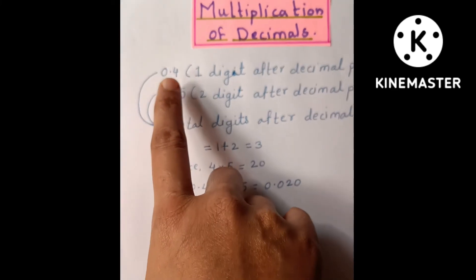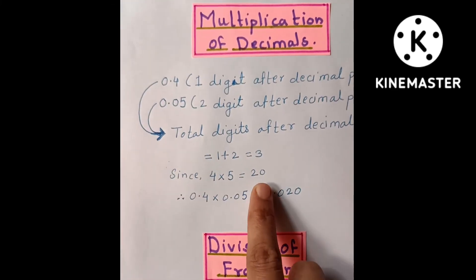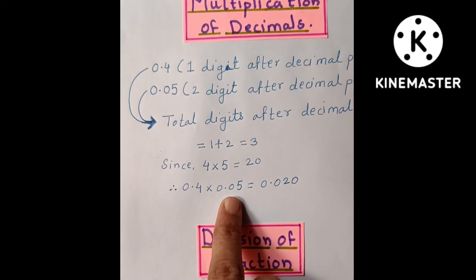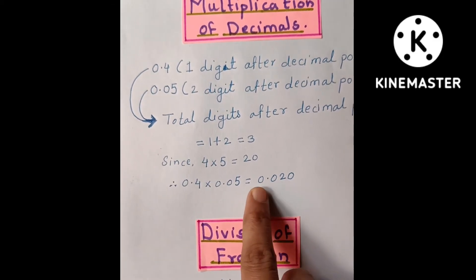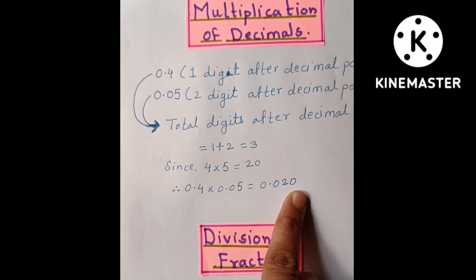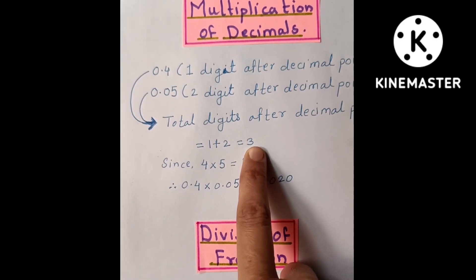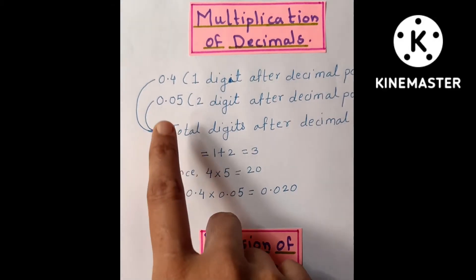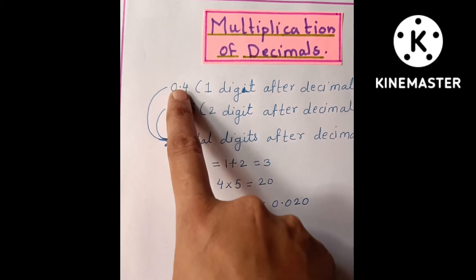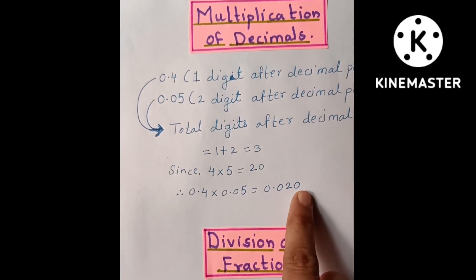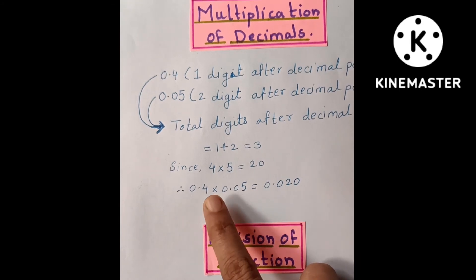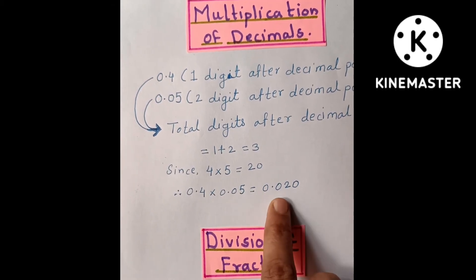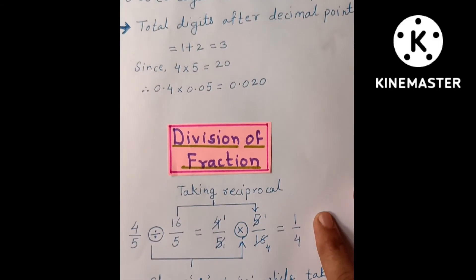Four multiplied by five is equal to twenty. So 0.4 multiplied by 0.05 is equal to 0.020. We have taken three digits after the decimal because the total digits after the decimal are three. So here the product of 0.4 multiplied by 0.05 is equal to 0.020.